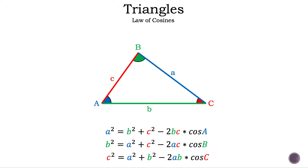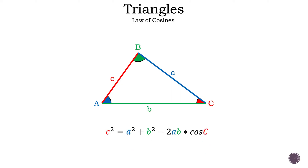Let's focus on just the bottom one. What formula does that look like? It looks like the Pythagorean theorem — just with C squared on the left-hand side instead of the right. To remember it, we know it looks like the Pythagorean theorem, and we have to subtract the next part. We have two letters on the right-hand side, so we write the number 2.